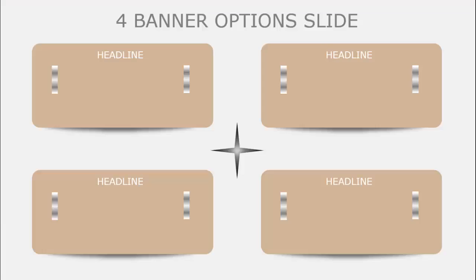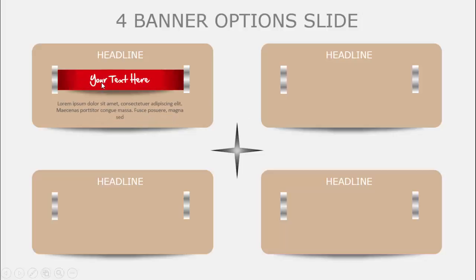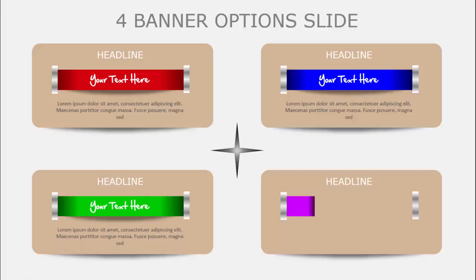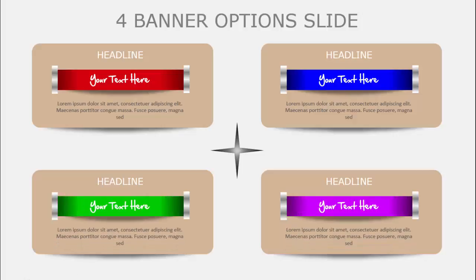In today's tutorial I'm going to show you how to create a four banner option slide in PowerPoint. As you can see, I have created four banners where you can add your headlines. When I click, a ribbon comes with the title and you can add detail text. The first red ribbon comes, then a different color ribbon, then the green, and then the purple ribbon.